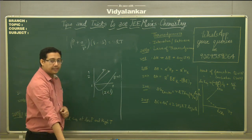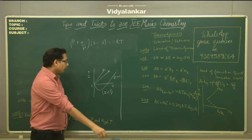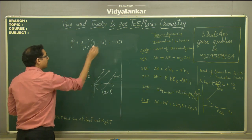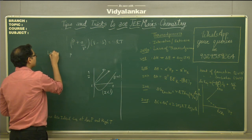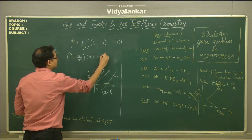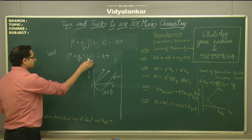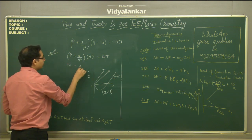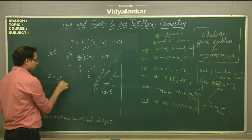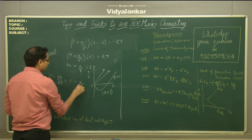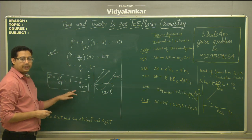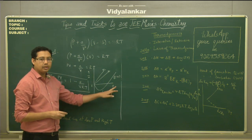Now observe the case when Z is less than 1. If Z is less than 1, that means volume is relatively large compared to b, so the b term can be neglected. Rearranging the equation gives PV + a/V = RT. Dividing both sides by RT: Z = 1 - a/(VRT). So Z is less than 1 at low pressure.